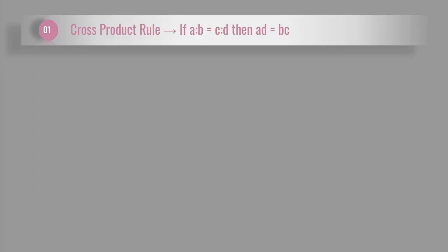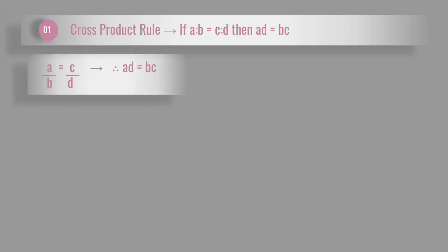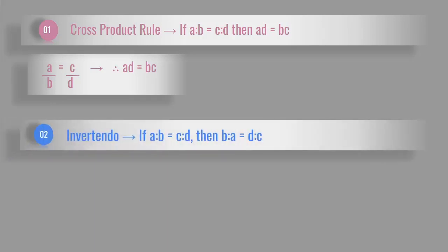First one, cross product rule. If A is to B is equal to C is to D, then we can write AD is equal to BC. So the explanation is: A is to B is equal to C is to D, so we can write A over B is equal to C over D. Therefore, D will go to A and B will go to C, so we get AD is equal to BC.